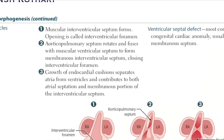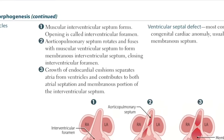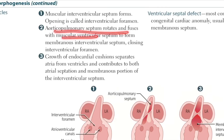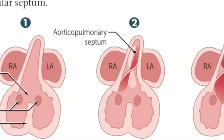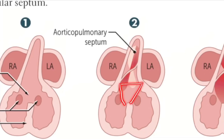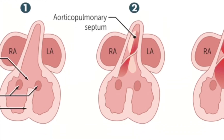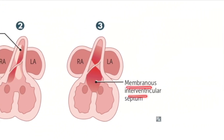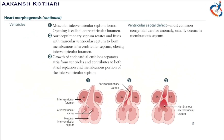The second step is the aorticopulmonary septum rotates and fuses with the muscular ventricular septum. This aorticopulmonary septum first rotates and then fuses with the muscular interventricular septum with the help of the membranous interventricular septum. There is formation of the membranous interventricular septum, which closes the interventricular foramen. This is how the ventricular septum is formed.